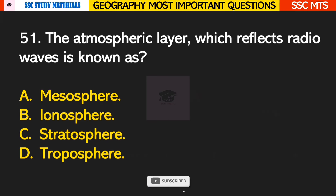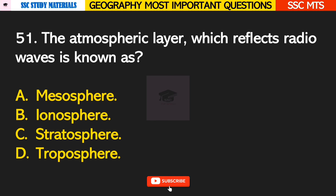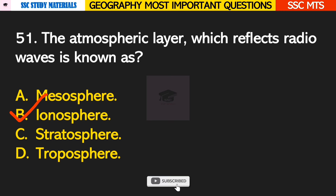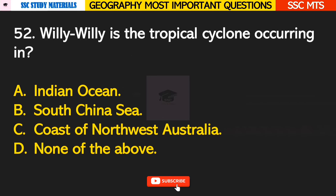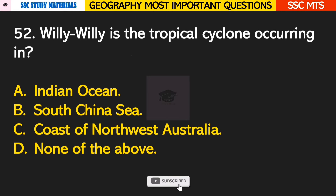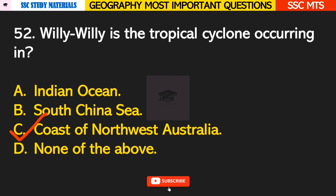Question number 51: the atmospheric layer which reflects radio waves is known as? Answer B — it is known as the ionosphere. Question number 52: Willi-Willi is the tropical cyclone occurring in? Answer C — the coast of Northwest Australia.